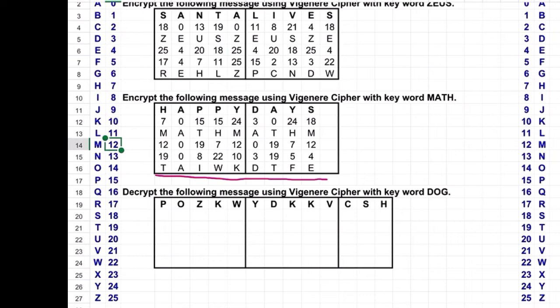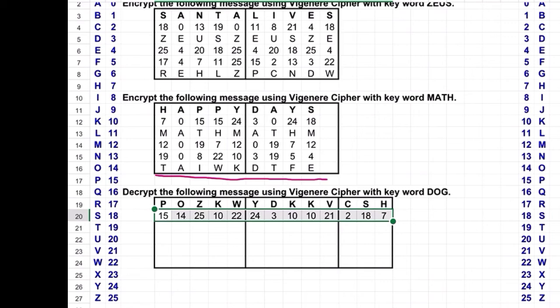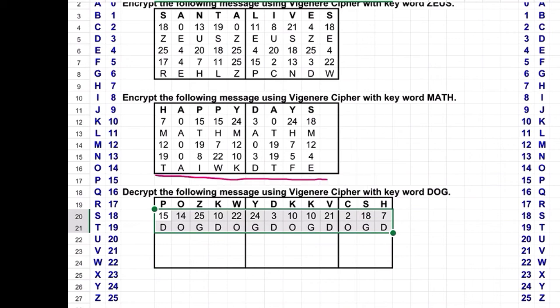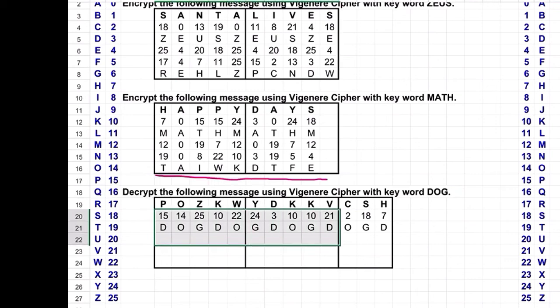Okay, so for this message we're decrypting instead of encrypting. The only difference here is when you put the keyword down, you're going to subtract the value from the keyword mod 26 instead of add. This part looks the same — we convert those to the corresponding numbers and get those values. The keyword is dog, so we're going to write dog dog dog dog and we have an extra D, and we look those up.